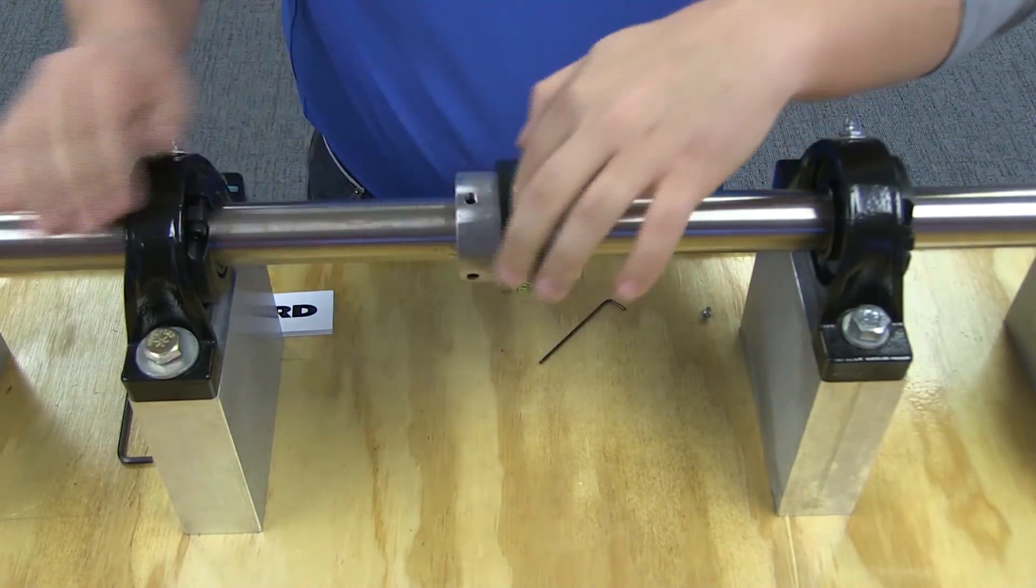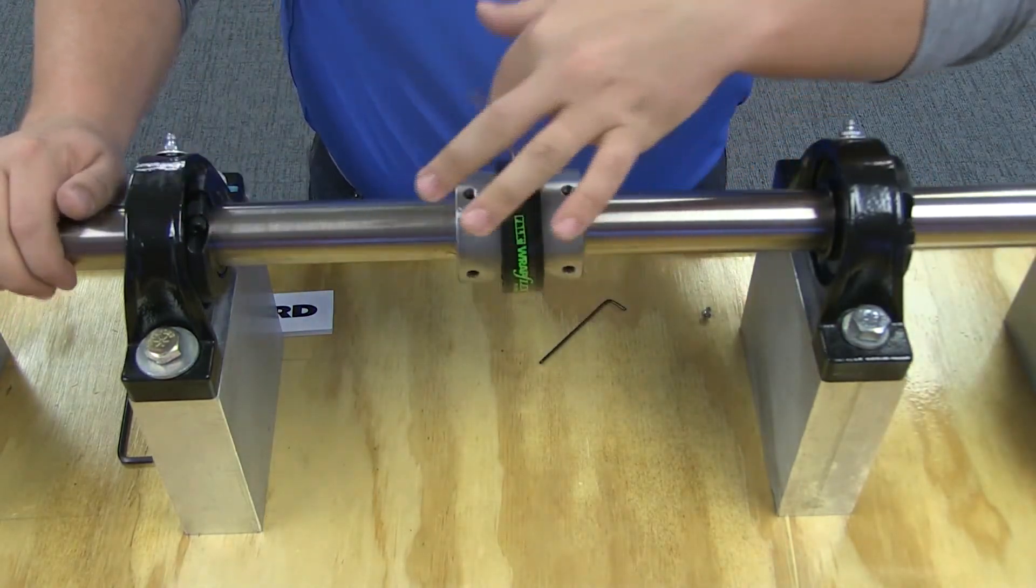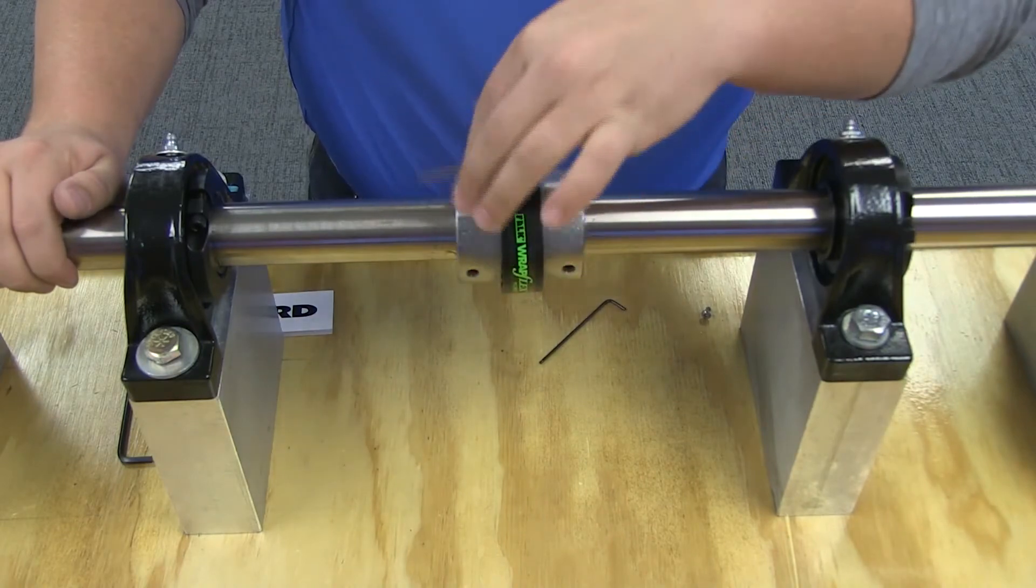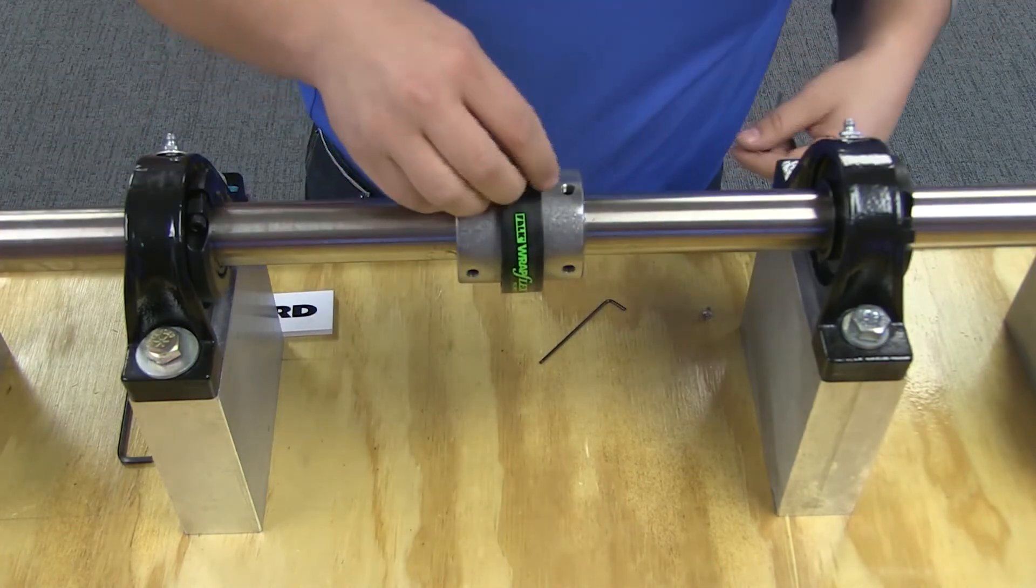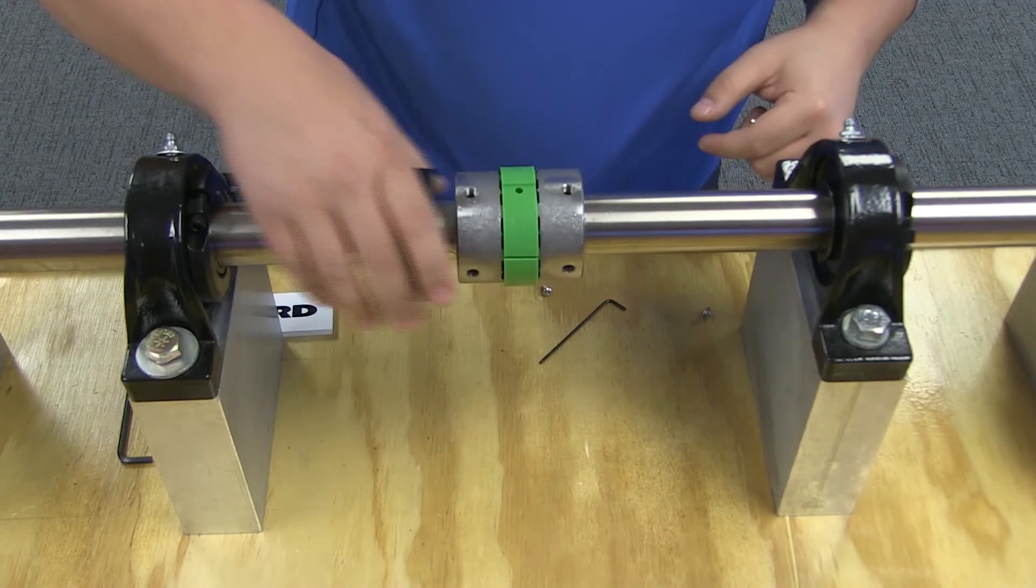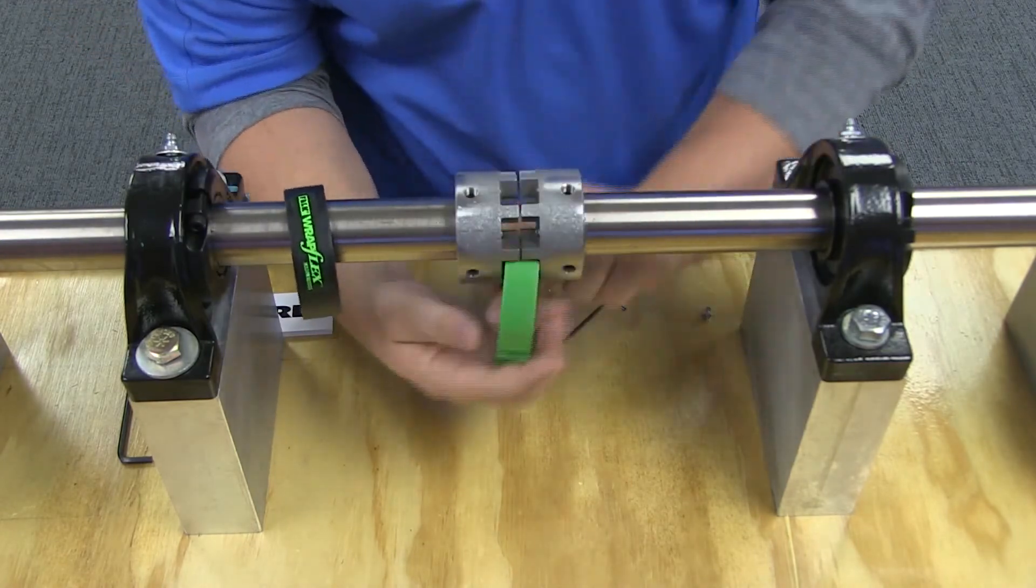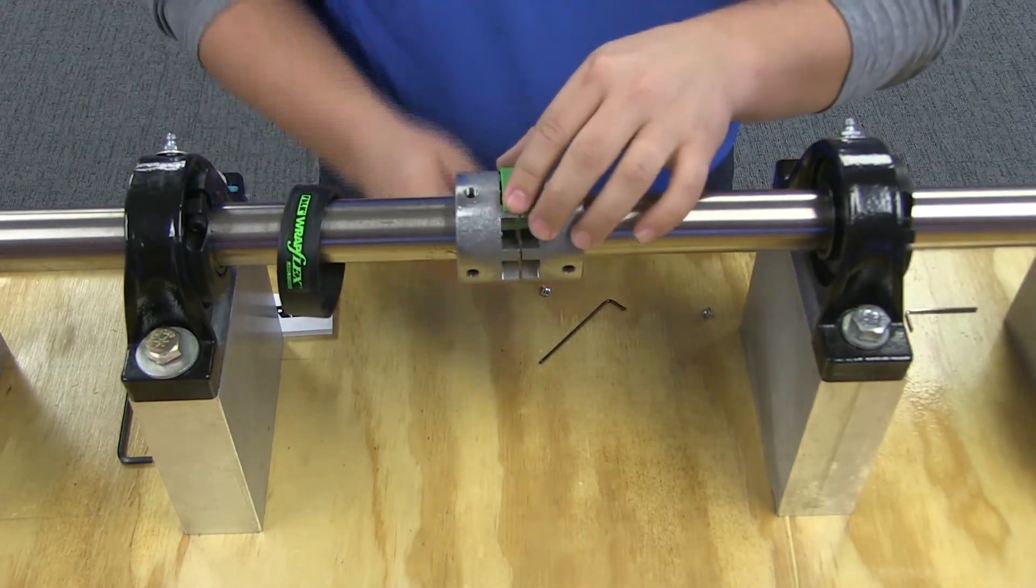Like most Rexnord couplings, the Radflex coupling can be replaced in place. To replace the wearing component of the coupling, simply unscrew the tightening screws, remove the retaining cover, unwrap the element, and replace with a new element.